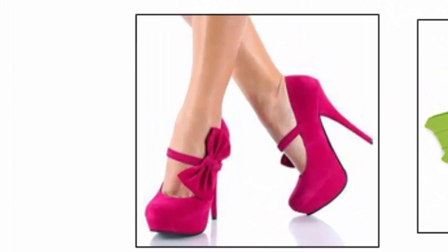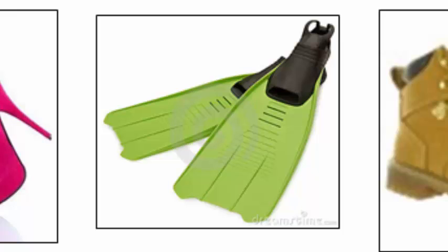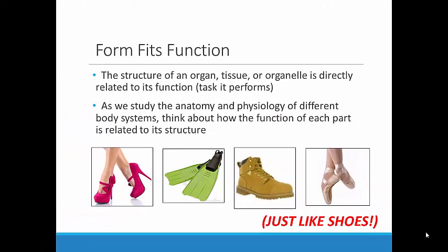The high heels have material that holds a person's heel higher than the toe — that's the structure of the shoe. Overall, this makes a person taller and also holds the leg in an attractive shape. The flippers have a different shape altogether. They are much longer than the foot and they have a large flat surface area. This shape allows it to perform its function, which is to push water more effectively and move a person more quickly as he swims. Take a moment and think about the structure and function of the work boots and the ballet slippers — how are they shaped, and what do they allow a person to do?